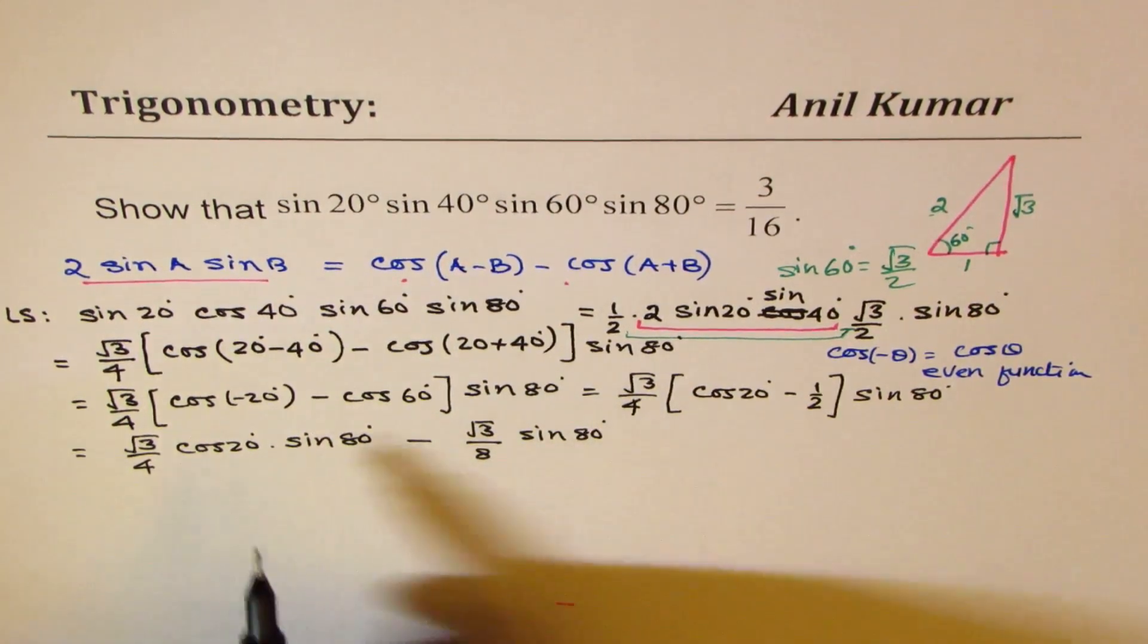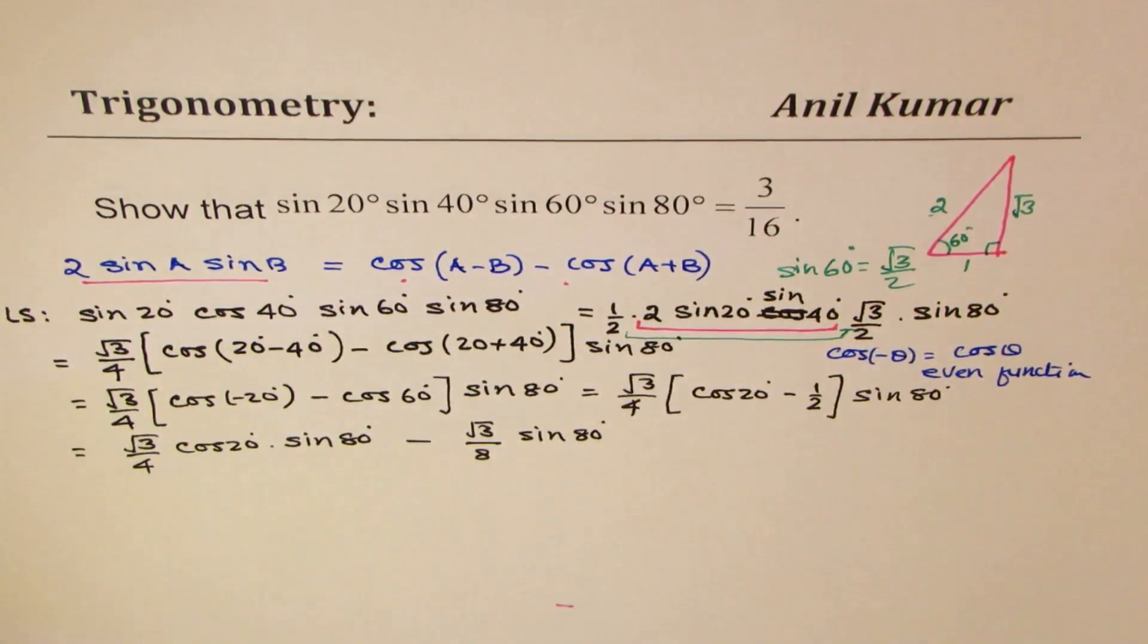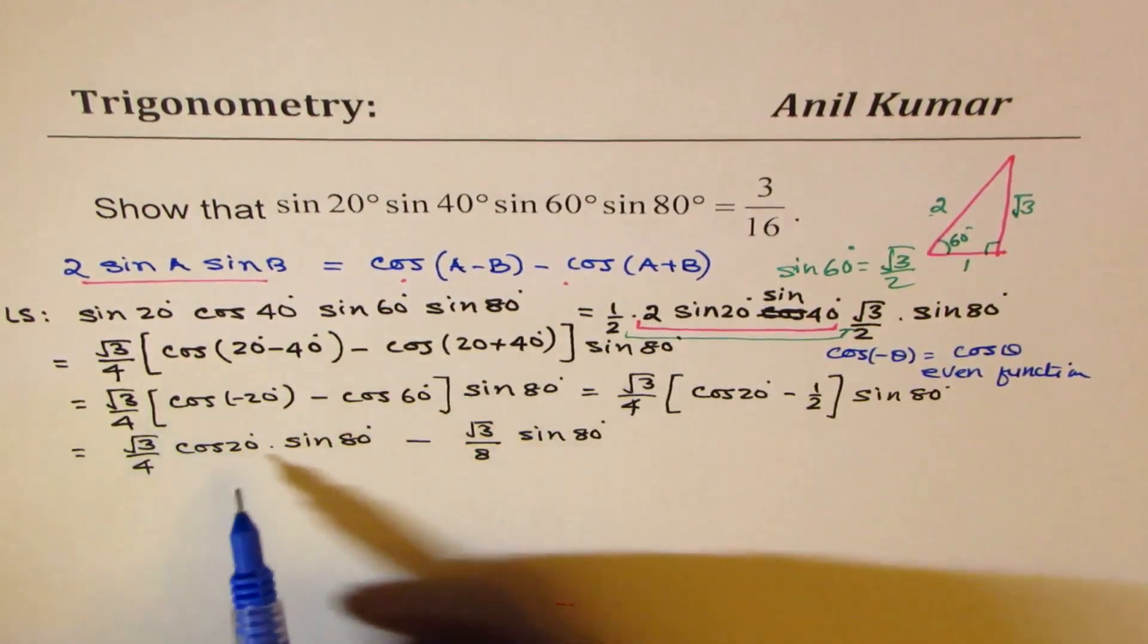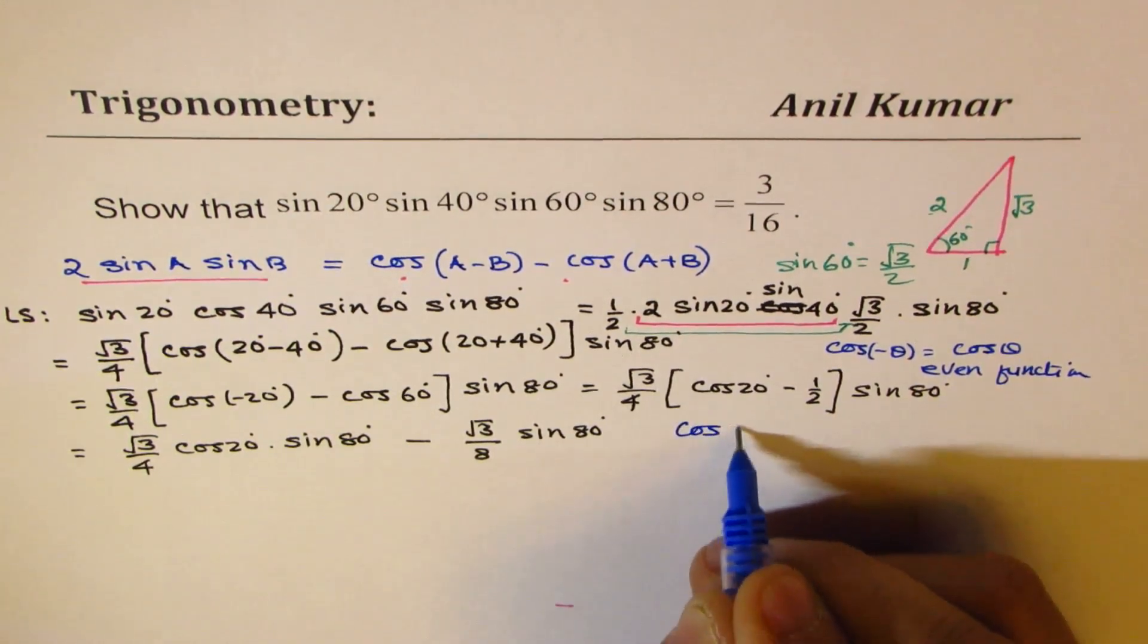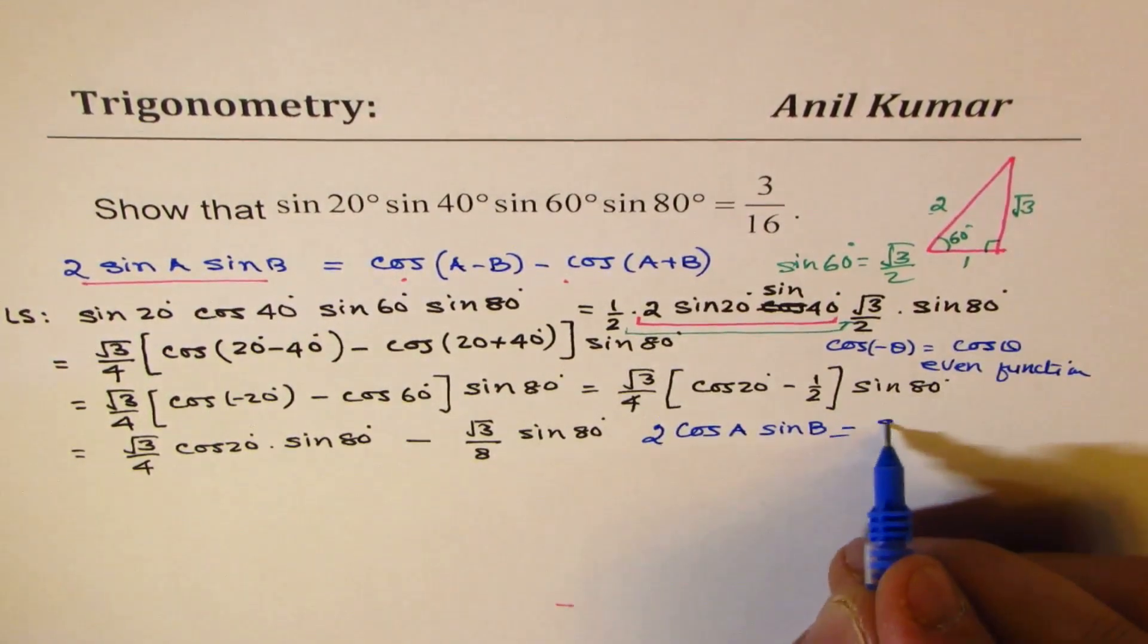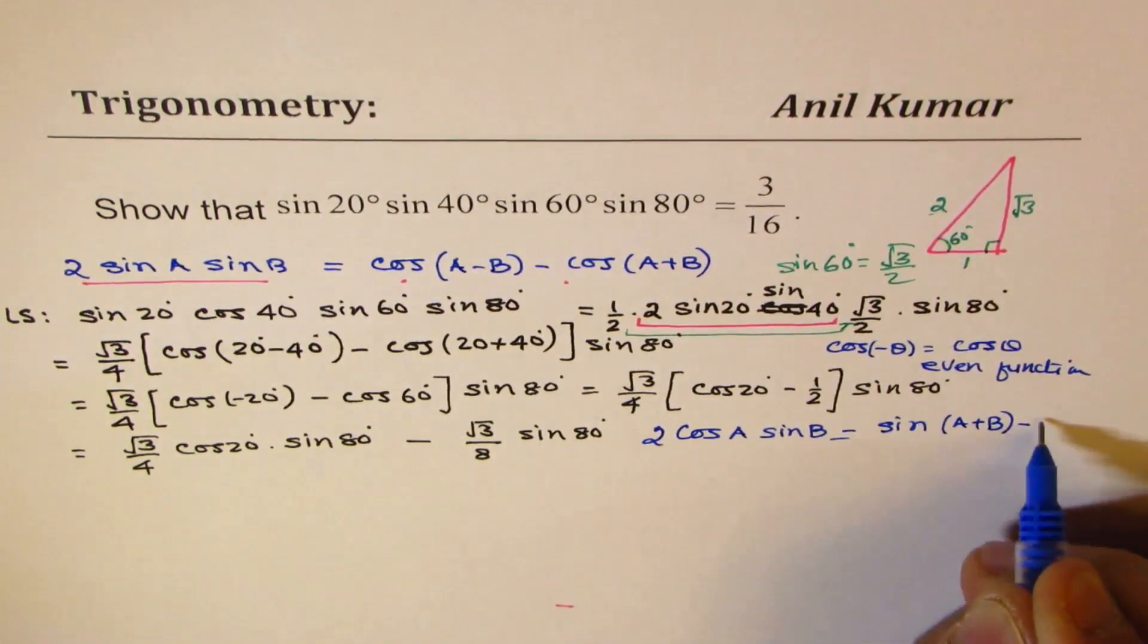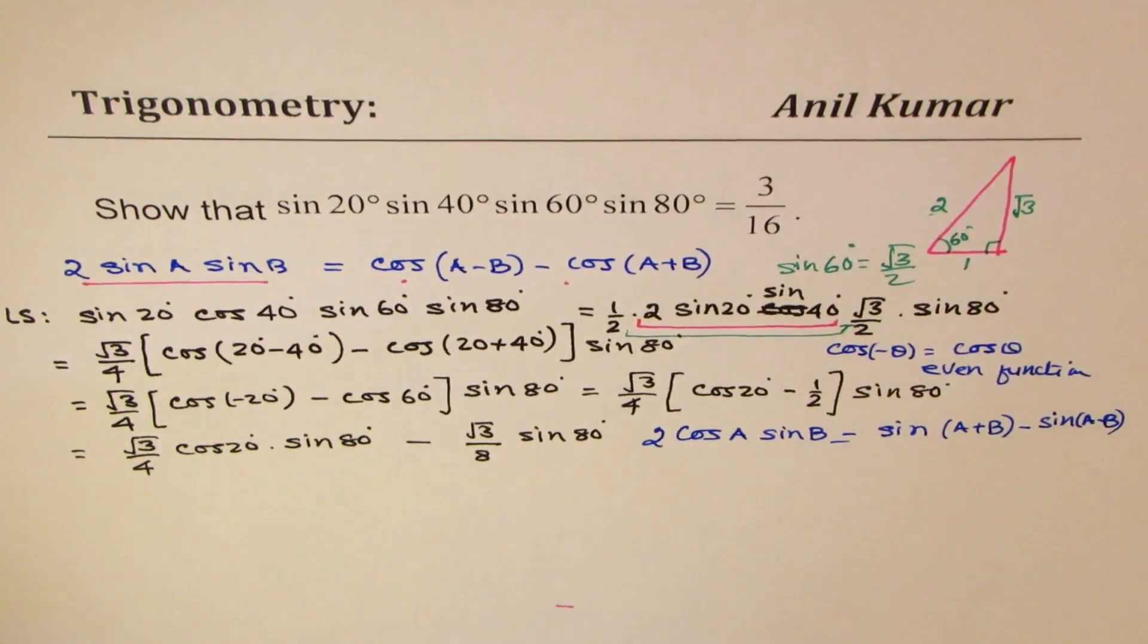Now, what we will do here is, this is cos A sin B. So for cos A sin B, we'll apply another formula. So when we have cos A sin B, when it is twice cos A sin B, in that case, it could be written as, sin(A + B) minus sin(A - B). So these are standard formulas, which we are going to use.